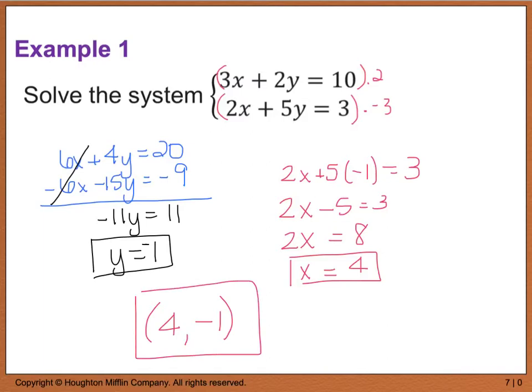Now if you go and graph this, you'll see that you'll have one point of intersection right here at 4, negative 1. You should also be able to plug 4, negative 1 into either one of these equations and get either 10 or 3 out.